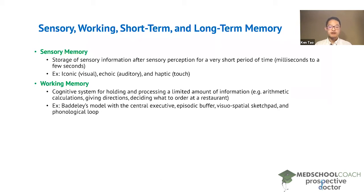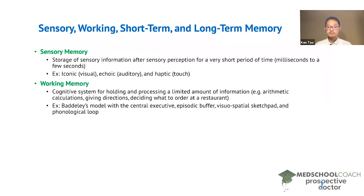The most famous model of working memory is Baddeley's model. Under Baddeley's model, there are four components of working memory: a central executive, the episodic buffer, the visuospatial sketchpad, and the phonological loop.